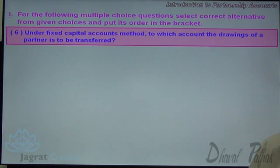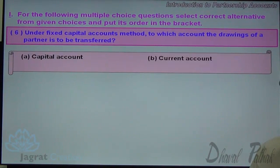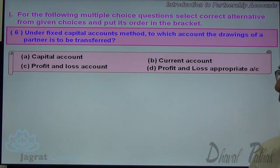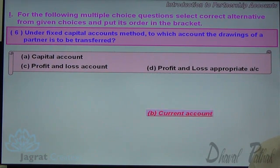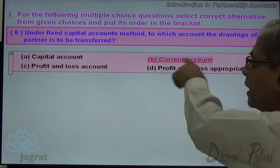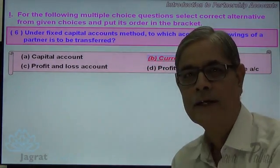Next. Under the fixed capital account method, to which account are the drawings of a partner to be transferred? Under the fixed capital account method, drawings are transferred to the current account. Option B — current account — is the correct answer.